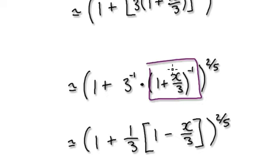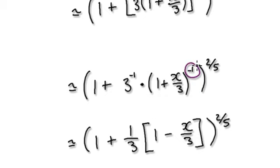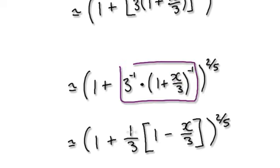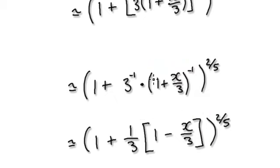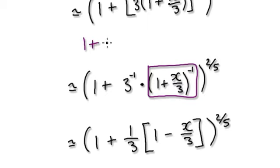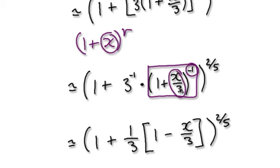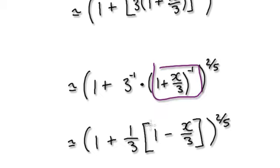Now when you're in this form, you can take the approximation of this — just this bit here. So it's basically this times this. This here is in the form of 1 plus x to the power of r, where r is this and x is this. So this approximates to this.